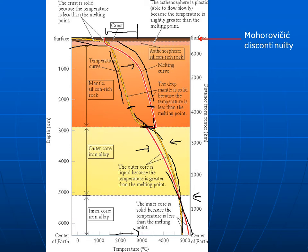There's a boundary between the crust and the mantle called the Mohorovičić discontinuity, or just the Moho — the boundary between the crust and the mantle. There's also the Gutenberg discontinuity, which is the boundary in density between the mantle and the core. The core is made of different material so it has a much different density, and these discontinuities are places where seismic waves tend to bounce off.